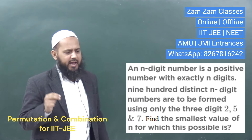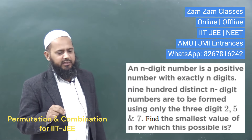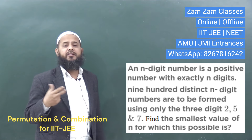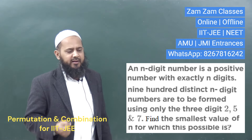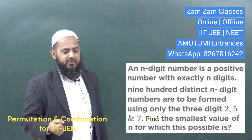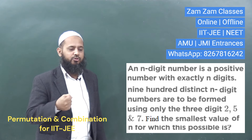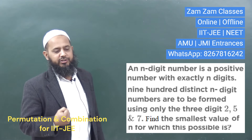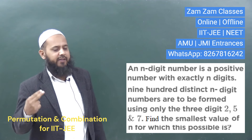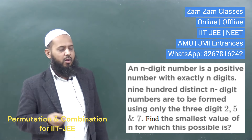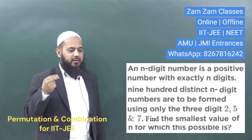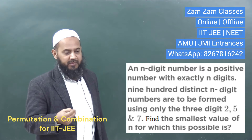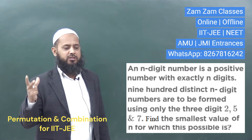The question is: an n-digit number is a positive number with exactly n digits. 900 distinct n-digit numbers are to be formed using only the 3 digits 2, 5, and 7. Find the smallest value of n for which this is possible.